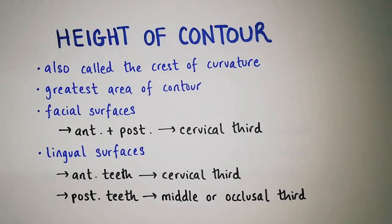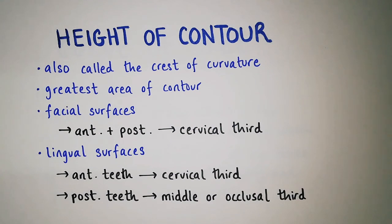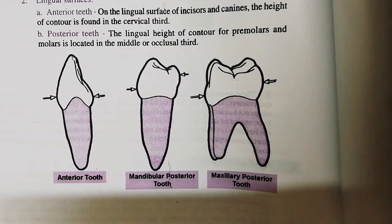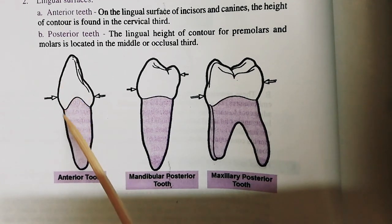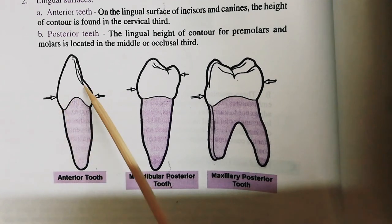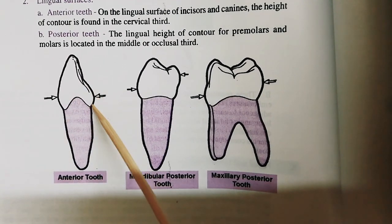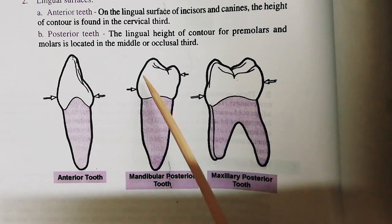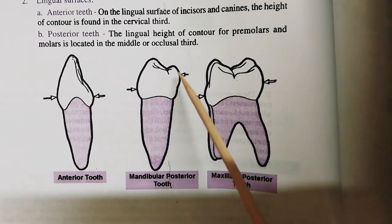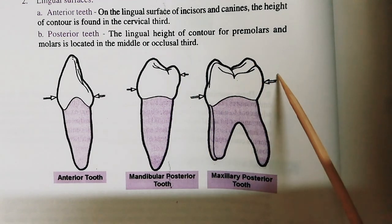The height of contour is also called the crest of curvature; it is the greatest area of contour. On facial surfaces of anterior and posterior teeth, the height of contour is in the cervical third. On lingual surfaces of anterior teeth, the height of contour is also in the cervical third. On lingual surfaces of posterior teeth, the height of contour is in the middle or occlusal third. In this diagram you can see the proximal aspect of anterior and posterior teeth. For the anterior tooth, the height of contour on the facial surface is on the cervical third, and on the lingual surface it is also on the cervical third. For posterior teeth, the height of contour on the facial surface is on the cervical third, but on the lingual surface it is on the middle or occlusal third.